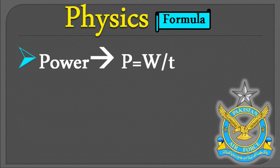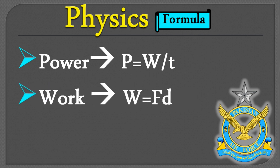Power کا formula ہے P = W/t، یعنی work over time۔ جو work وقت کے ساتھ کیا جائے اسے ہم power کہتے ہیں۔